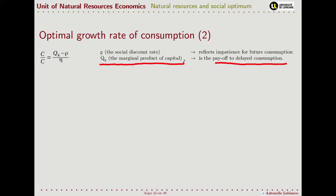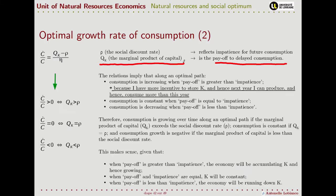Analytically, when the marginal product is higher than the social discount rate, we see that the growth rate of consumption will also increase. This is because consumption is increasing when the payoff is greater than impatience: I have more incentive to store capital, and hence next year I can produce more, because my marginal product of capital is higher compared with my impatience — my preference for today.